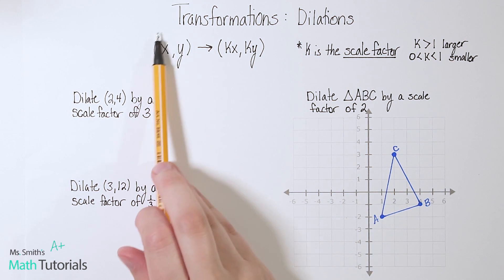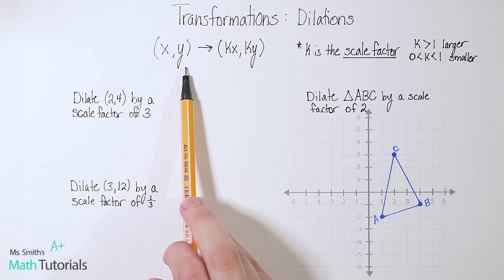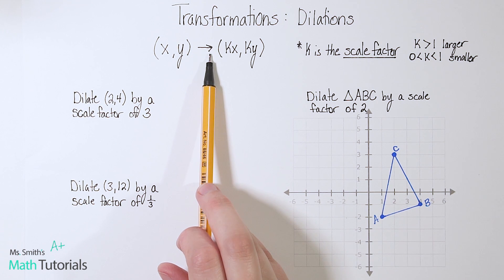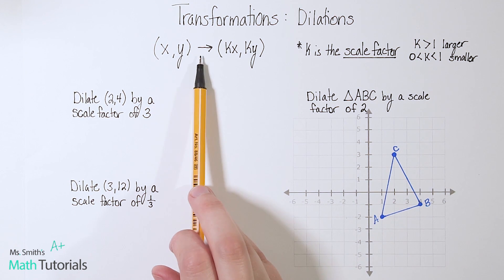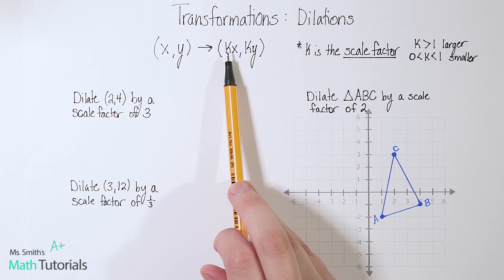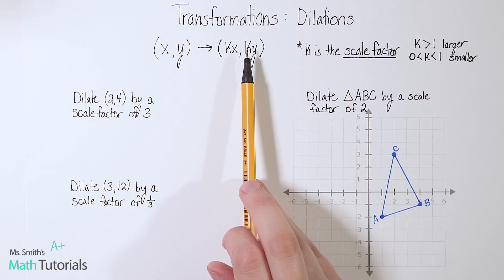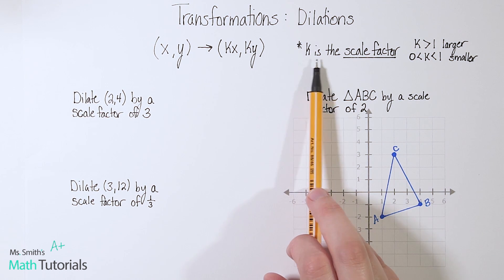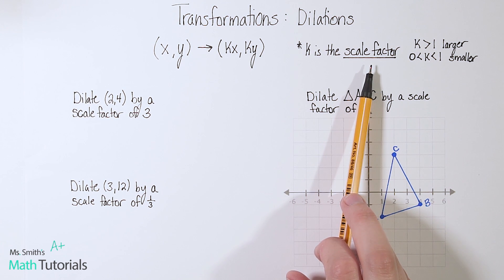So the first one we're going to learn is we are going to take a point, an xy point, any point, and it will become, that's kind of how this reads, xy becomes, in this case for dilation, the rule is kx and ky. Now k is the scale factor. So k is how big or how small we're going to make something.